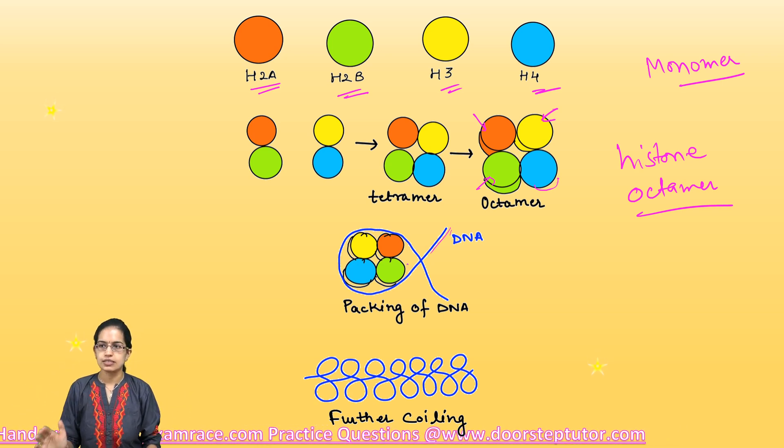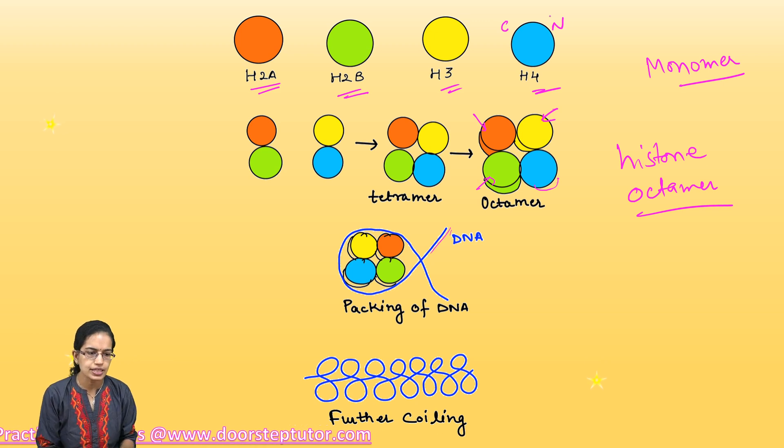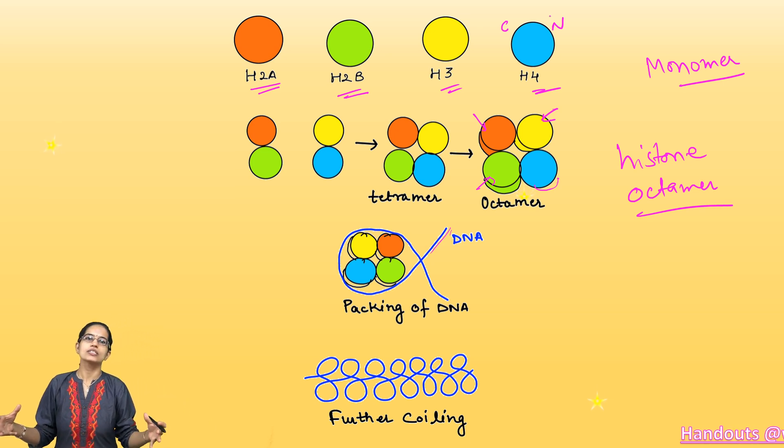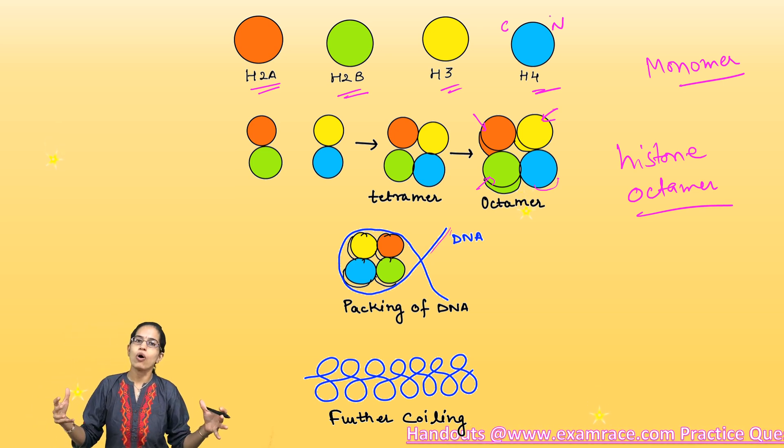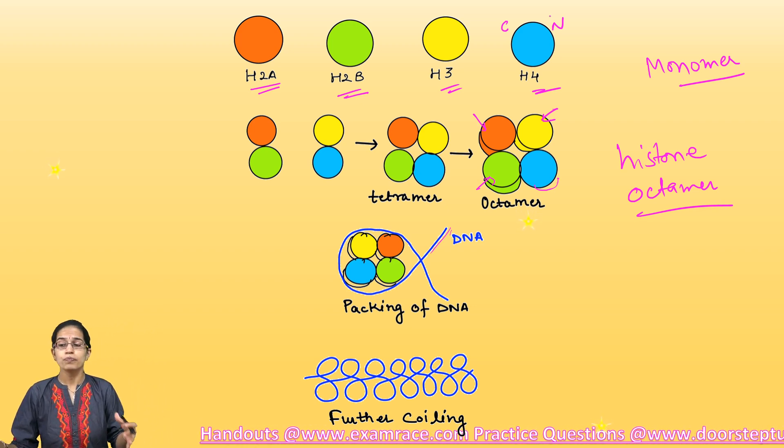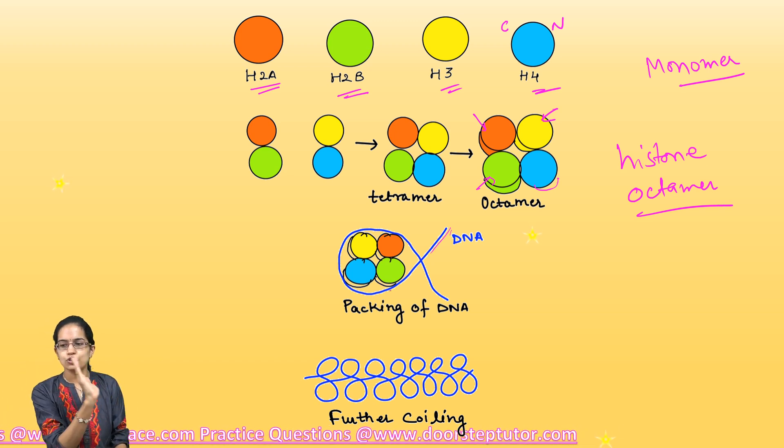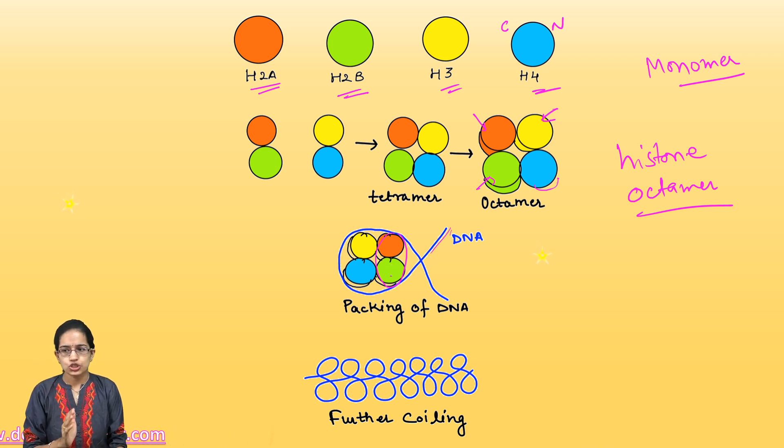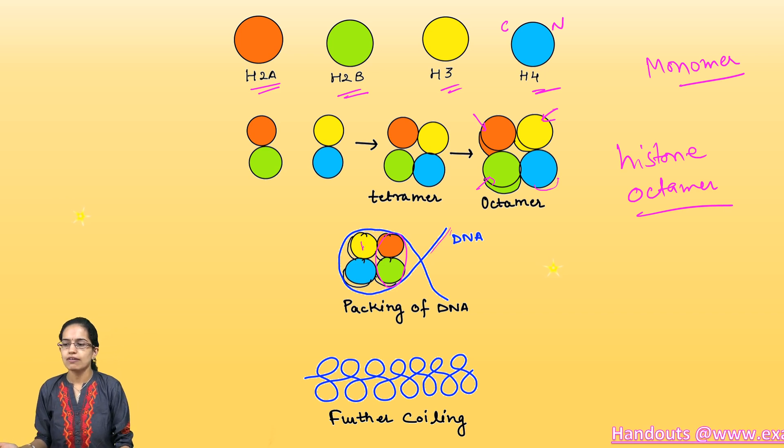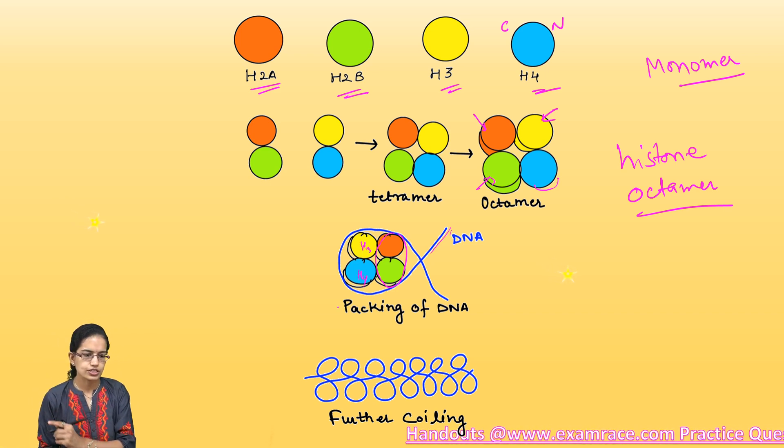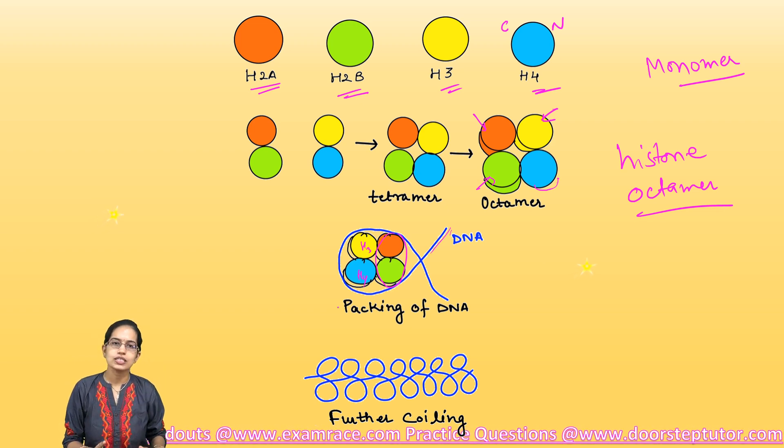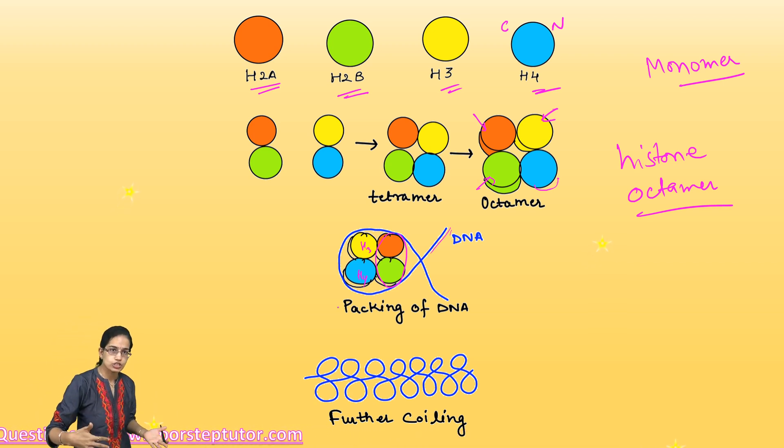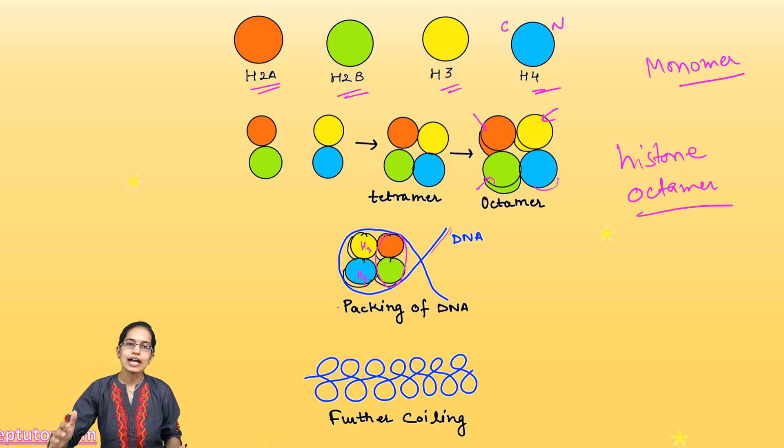Each of this histone would have two terminals: one terminal would be the N terminal, the other terminal would be the C terminal. Histones would have the C terminal and the N terminal that would be there, and both of them would have interactions. These interactions could be in the form of hydrogen bonds or they could be in the form of salt bridges. When you have this arrangement, on the side towards the V you would have the H2A and H2B that would be arranged, and on the opposite side you would have the H3 and the H4 that would be arranged. Since all of those have N terminals, the N terminal of H3 and H4 is more prone to any kind of chemical modifications.